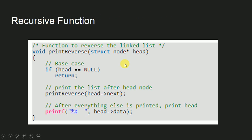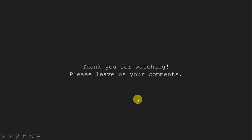Let us now understand the program code of this recursive function. As this function does not return any value, the return type of the function is void. This function takes a node as an argument. It then checks whether the node is null or not — this is the base case for the recursion. If the node is null, control will return from this function. Otherwise, the function will invoke itself by passing the next node as an argument. When control is returned back to this function, it will print the data of the current node.